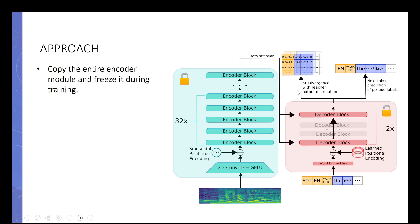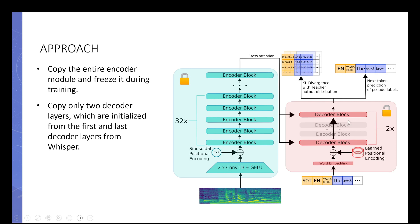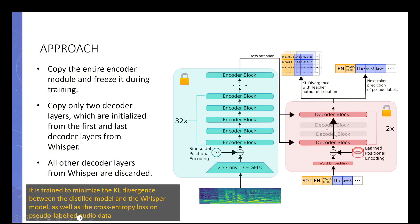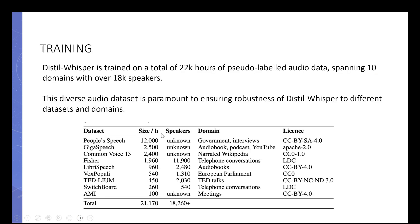We use KL divergence for matching. The entire encoder is copied and frozen, and only two decoder layers are kept — all other decoder layers from Whisper are discarded. KL divergence is used between the distilled model and the Whisper model, along with cross-entropy loss and pseudo-labeled audio data to match performances. The training was done on 22,000 hours of pseudo-labeled audio data spanning 10 domains over 18,000 speakers.